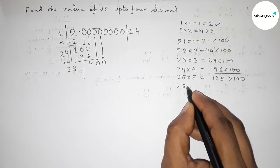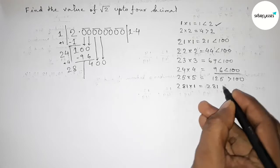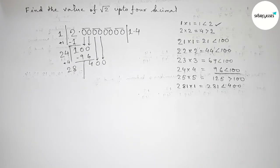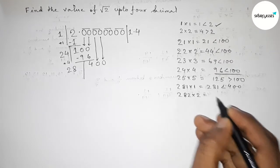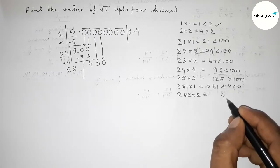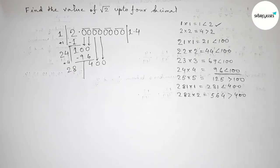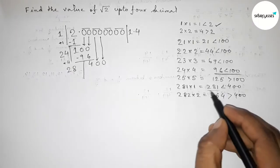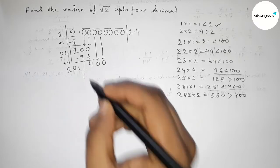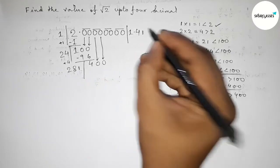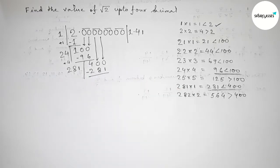If we put 1 beside 28, then 281×1=281, which is less than 400. If we put 2 beside 28, then 282×2=564, which is greater than 400. So we take 281 as it is nearest to and less than 400. We put 1 here.